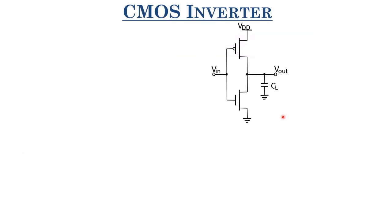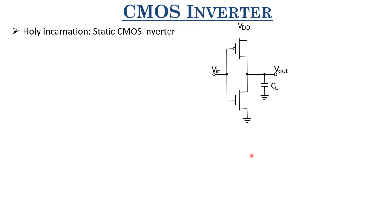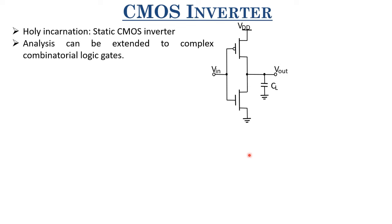This is how a CMOS inverter looks — we introduced it in the last lecture. It's a holy incarnation of inverters. Compared to all other MOSFET-based inverters with static MOSFET loads or resistor-based loads, this is the most promising form of inverter. If you learn this well, you can always extend all the analysis done for CMOS inverters and analyze even complex logic.